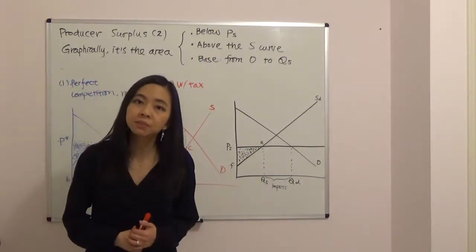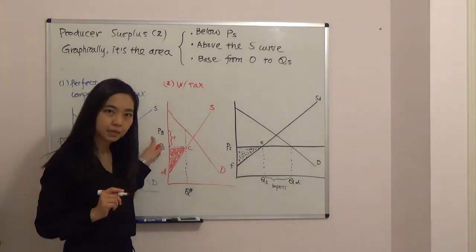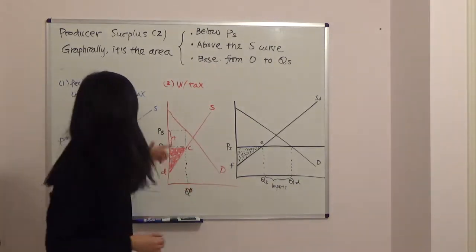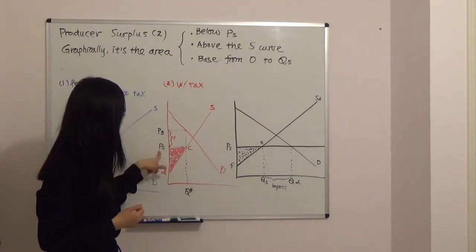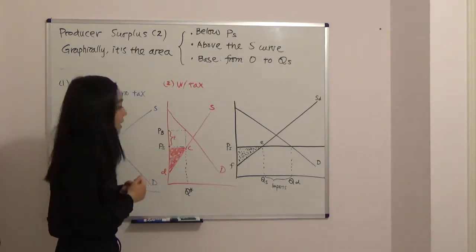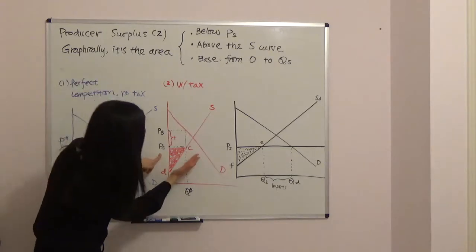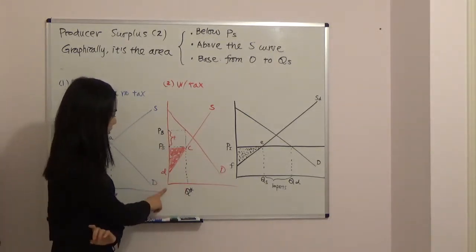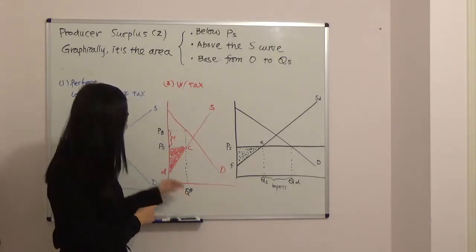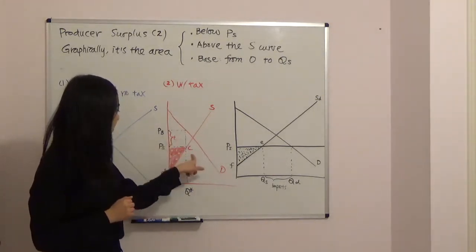What happens if the government imposes a lump-sum tax of T dollars? This T dollars sits exactly between the price received by the seller and the price paid by the buyer. The buyer pays price PB, the government takes away T dollars, and the rest goes to the seller as PS. So PS plus T equals PB. In this case, producer surplus is the area below PS, above the supply curve, with the base from zero to equilibrium quantity Q star. When there is a tax, producer surplus equals triangle area PS S C D, which is smaller than before.